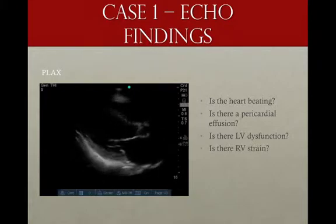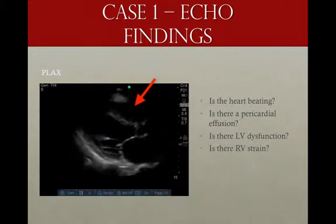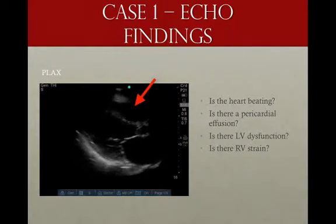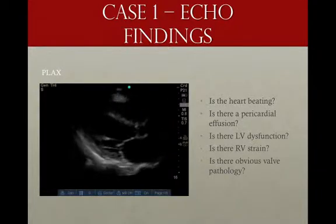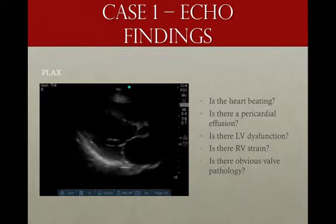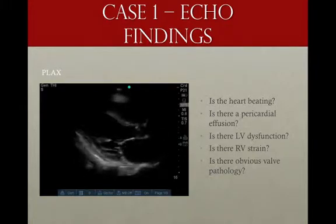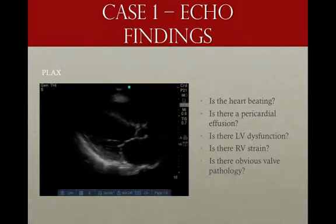Is there any RV strain? Looking at the right ventricle at the top of the screen, it doesn't look enlarged and looks overall pretty normal. Is there any obvious valve pathology? The mitral valve isn't opening very well, which is a clue to our LV dysfunction.